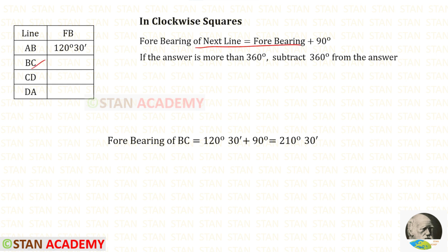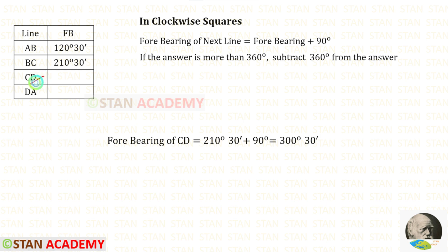Fore bearing of BC: 120 degrees 30 minutes plus 90 degrees — we will get 210 degrees 30 minutes. Now let us find the fore bearing of CD: 210 degrees 30 minutes plus 90 degrees — we will get 300 degrees 30 minutes.